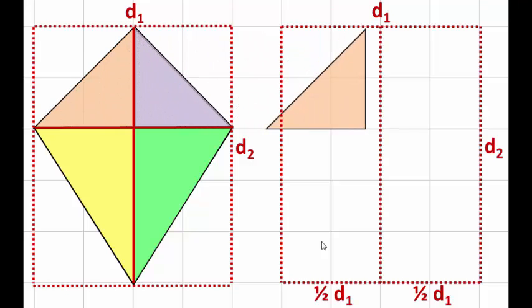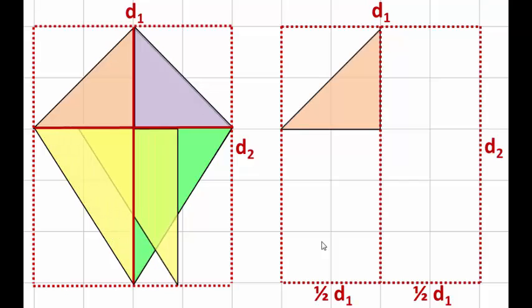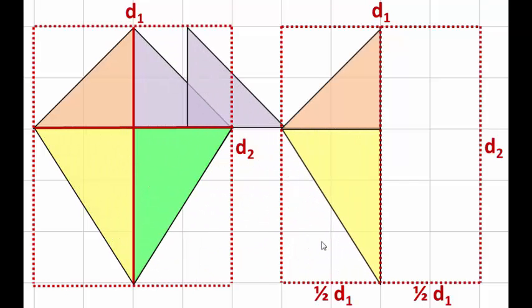So starting with the orange one fits very nicely in there. And the yellow triangle fits nicely in there. So let's move the purple triangle over and it doesn't fit exactly. So we're going to have to rotate it 90 degrees clockwise. And that will fit perfectly in there.